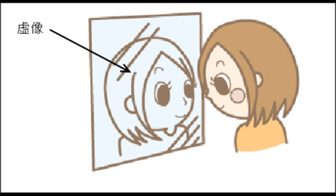実際にはないが、あるように見える像を虚像と言います。鏡に映った像は虚像です。虚像の虚は、嘘、偽りという意味です。本当にはない、偽りの像だから虚像ですね。